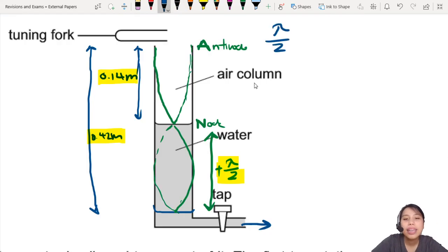You can write that out in the working like this. So lambda over 2, which is half a wavelength, equals to 0.42 minus 0.14. And that is your lambda. You can find lambda here. So we can do this: 0.42 minus 0.14 times 2.